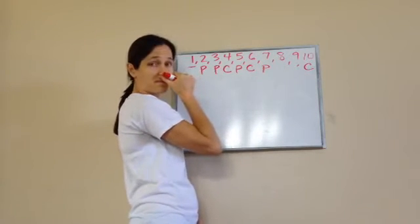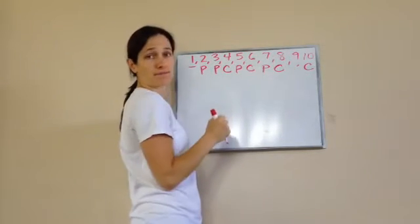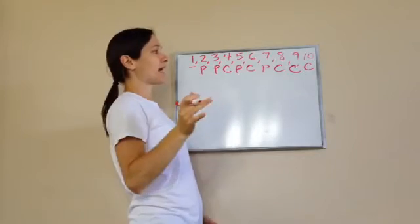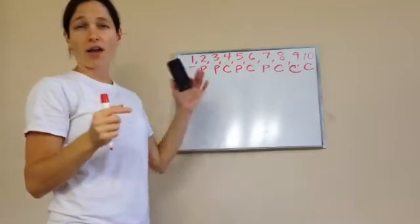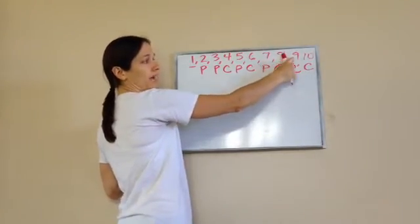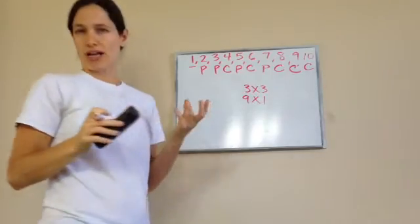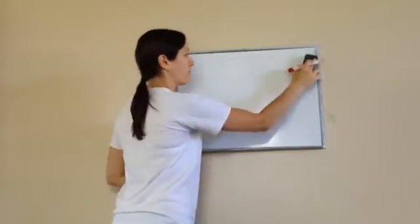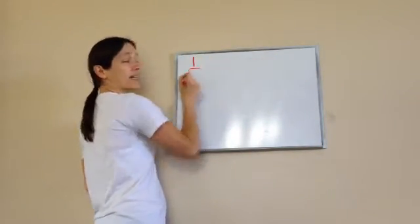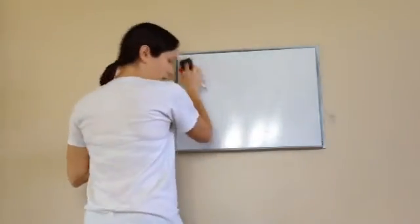8 — composite. Why? 4 times 2 and 8 times 1. 9 — composite. Why? 3 times 3 and 9 times 1. A lot of times people think that odd numbers are prime and even numbers are composite, but that's not true. 9 is an odd number, but 3 times 3 and 9 times 1 go into it. Also, 1 is neither prime nor composite — it's not considered either.